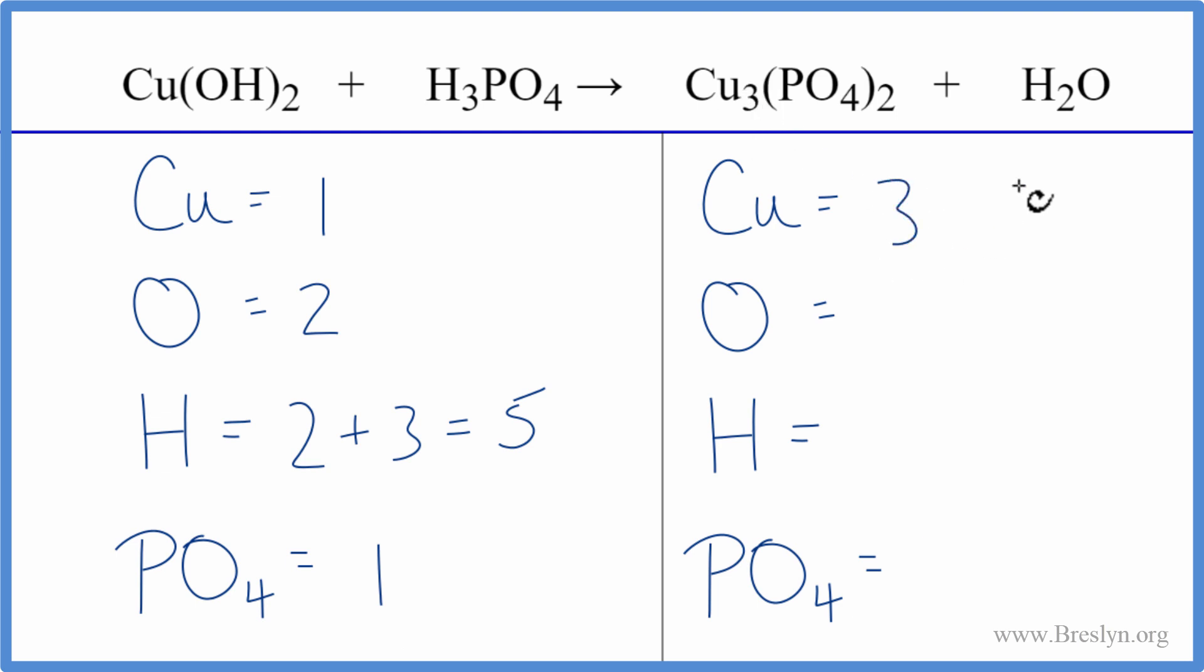On the product side we have three coppers, one oxygen, two hydrogens, and then the phosphate here times two, so we have two phosphates. Let's leave the oxygens and hydrogens to last. That's usually a pretty good technique.